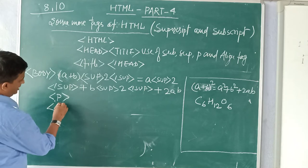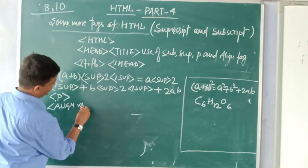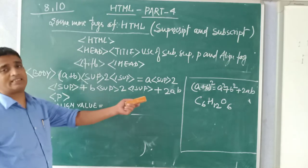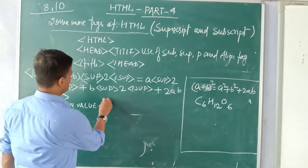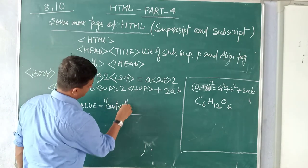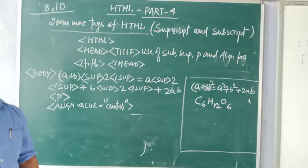So first of all we are changing the paragraph. I will put P here. Alignment first one. So you can type here ALIGN then value is equal to - where you want to be displayed? In the center. So under double quotes you will write center then close the bracket.